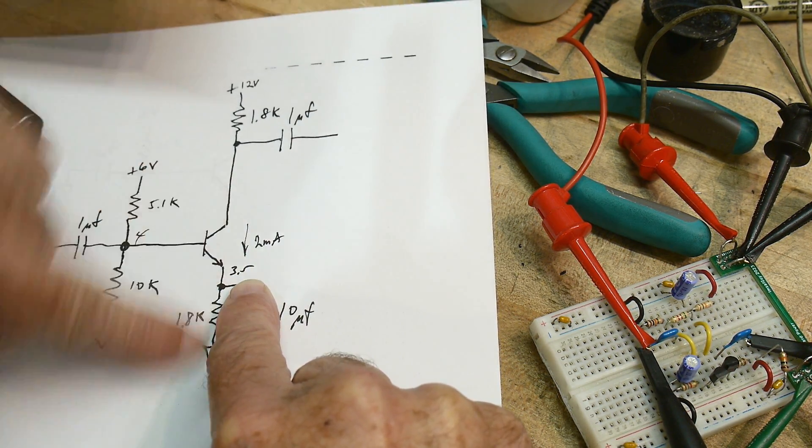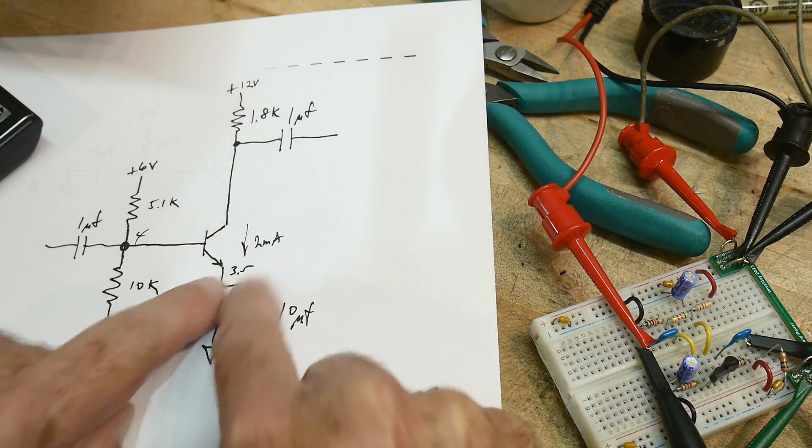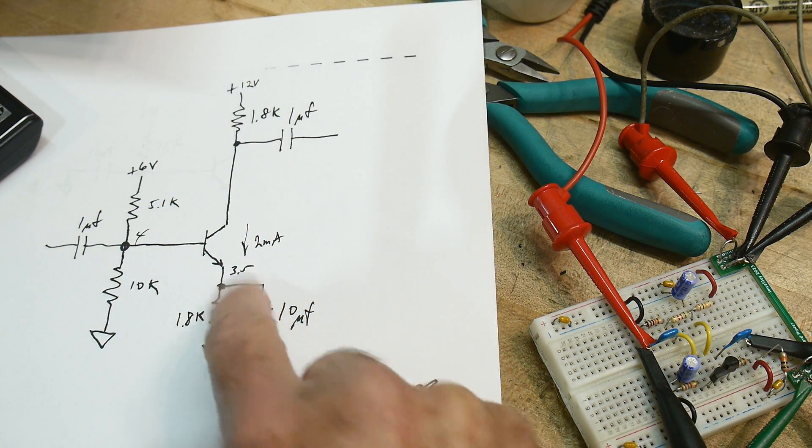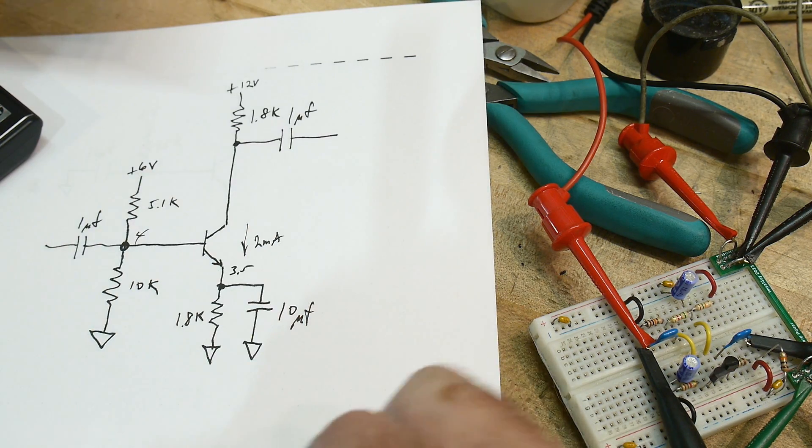So did you understand that? If you have four volts here, three and a half, three and a half across this, that sets up the current through this resistor. And whatever current this is, it's going to be the current through the whole thing. So we have a two milliamp. Now that's DC.